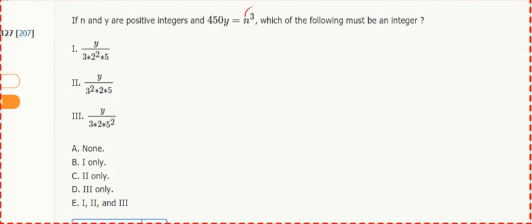450y equals n cubed. So what is the point of that equaling an integer cubed? Well, that means when you take the cube root of something, you raise it to the one-third.